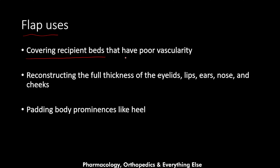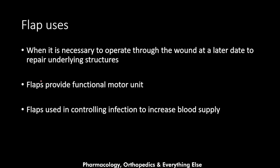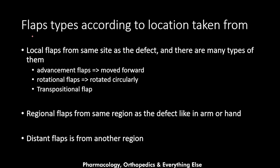The flap is used for covering recipient beds with poor vascularity, reconstruction of full thickness defects of the eyelids, lips, ears, nose, and cheeks, and for padding body prominences like the heel. It is also used when it is necessary to operate through the wound at a later date to repair underlying structures — unlike a graft, a flap will survive re-operation. Flaps can also provide a functional motor unit when muscle is lost, and are used to control infection by increasing blood supply.